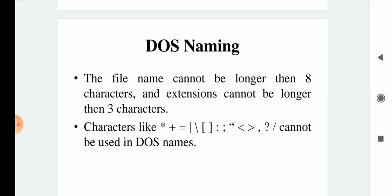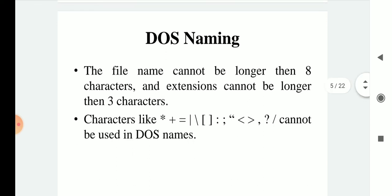DOS naming is like an option for naming your files. Whatever file you are using in DOS must follow the proper syntax: the name of the file cannot be longer than eight characters, and the extension cannot be longer than three characters. For example, when you make a document file you write something like 'a.docx' — here 'a' is the name of the file and '.docx' is the extension.